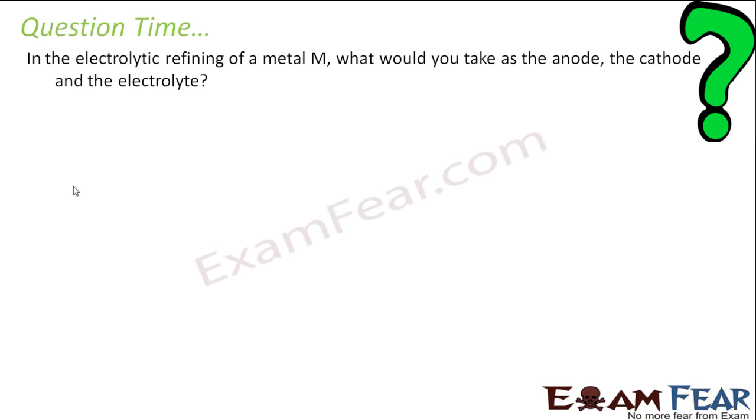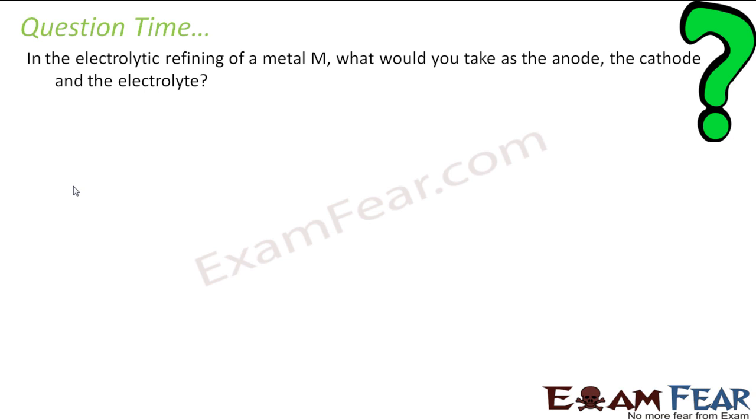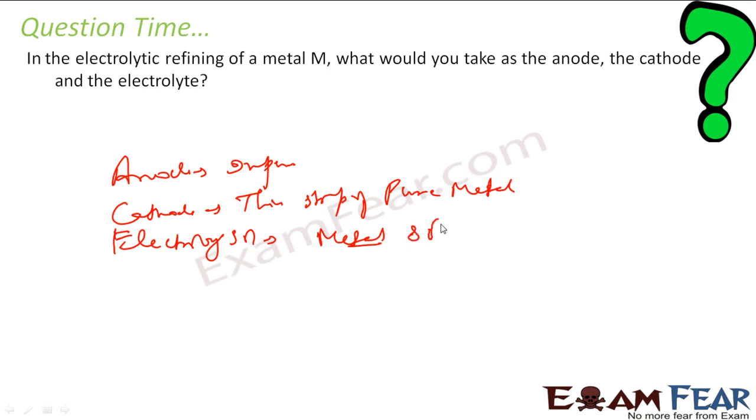The next question says that in an electrolytic refining of a metal, what would you take as anode, cathode and electrolyte? So we know that anode we generally take as impure substance, we take cathode as thin strip of pure metal. We have done for the case of copper, actually we have shown that and my electrolyte solution is nothing but my metal solution. For example, in case of copper, we take copper sulphide.